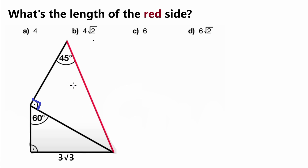So let's look at the bottom triangle to see what it can give us. We see it is also a right triangle and it has an angle of 60 degrees, and unlike the first triangle it gives us a known side length. That means we can perform trigonometry with it to figure out the shared side length that borders the top triangle, and then use that side length to figure out the red side length.